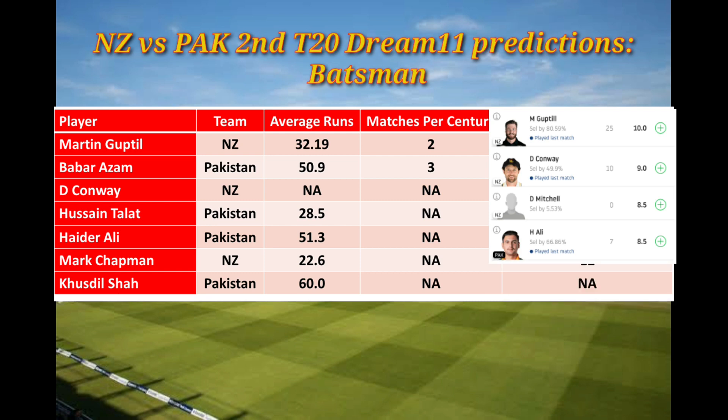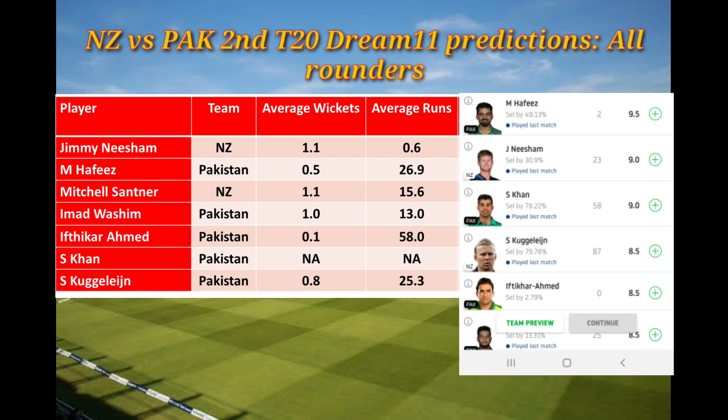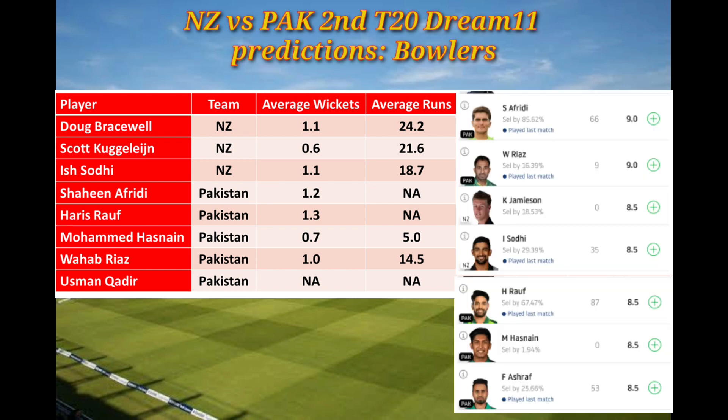For all-rounders, the table shows average wickets and runs scored by each player. In the last match, Corey Anderson scored 87 Dream11 points, which is the highest among all-rounders, and Yasir Khan has scored 58 points, the next highest performer.